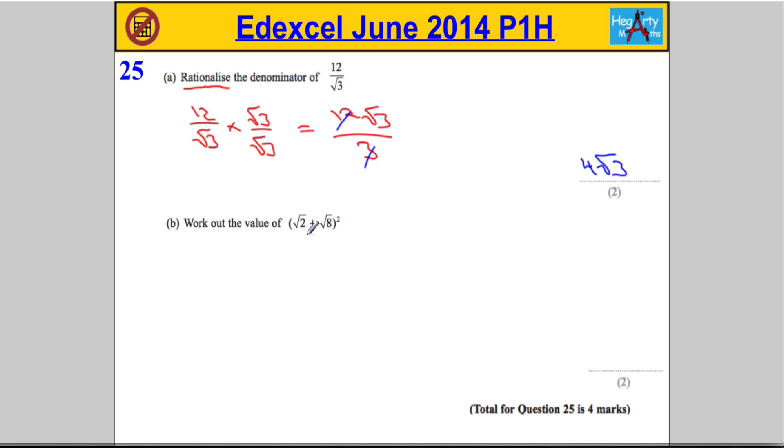Part B, we're asked to work at the value of root 2 times root 8 all squared. So, well, that's going to be the same as root 2 plus root 8 times root 2 plus root 8.